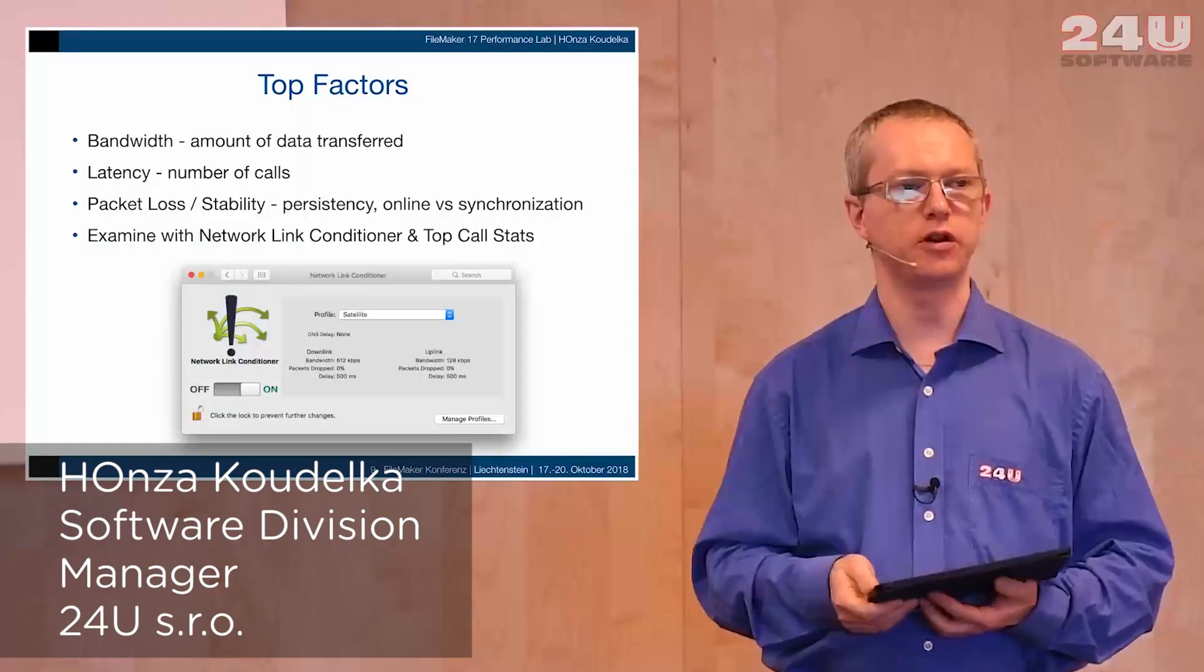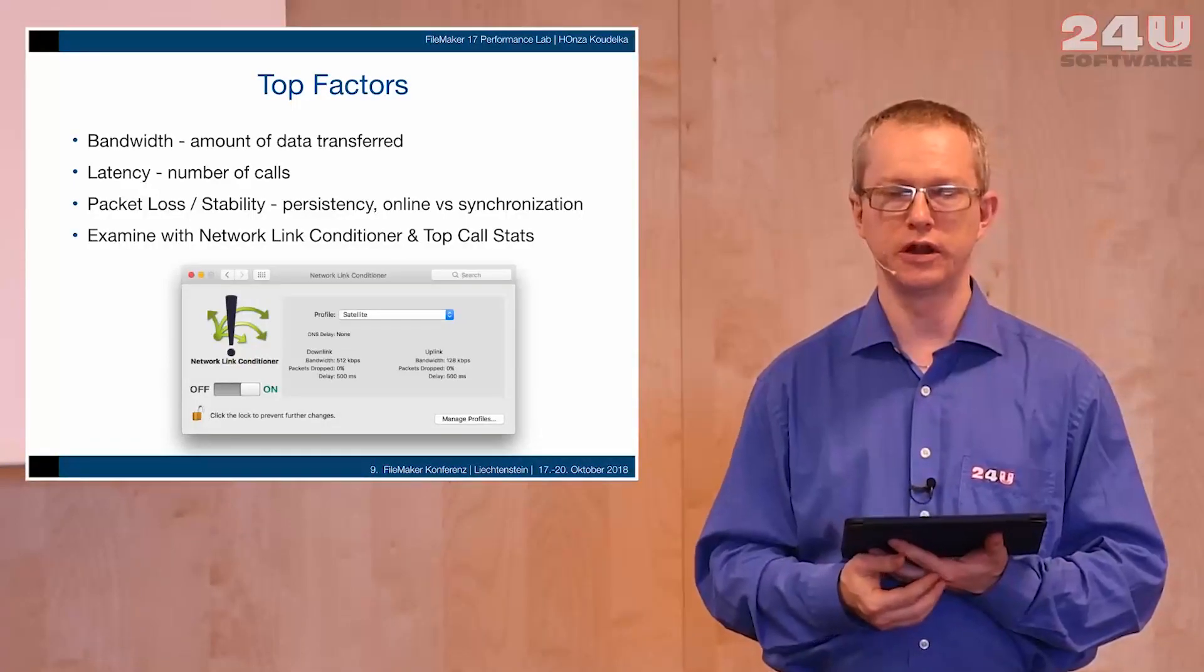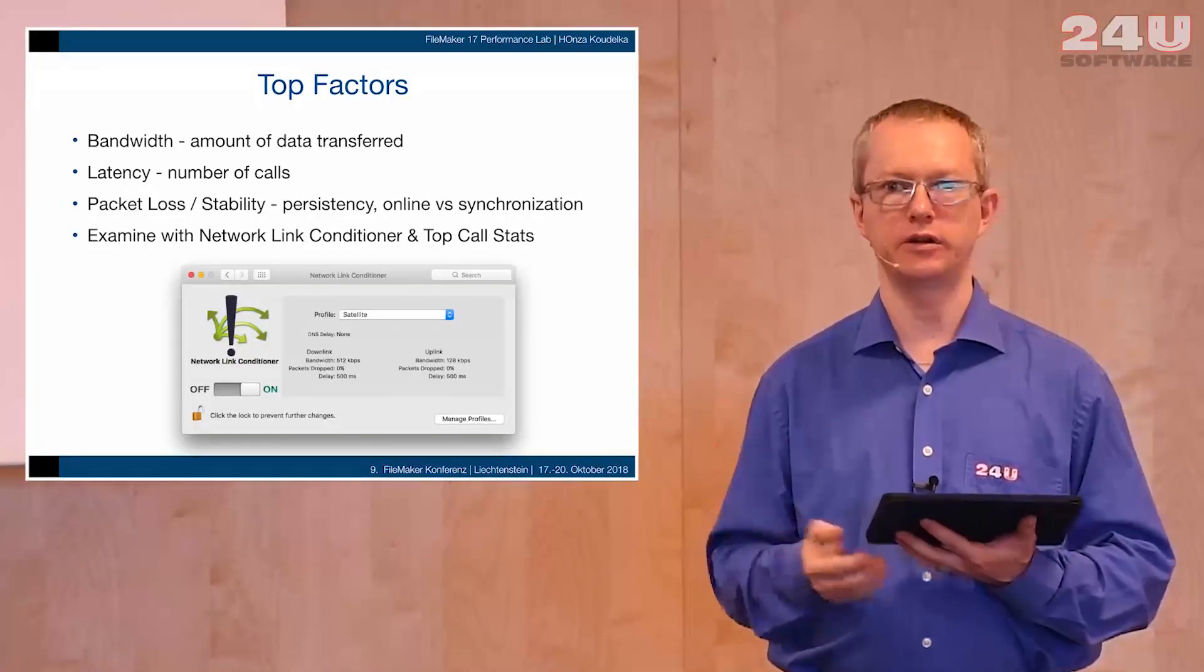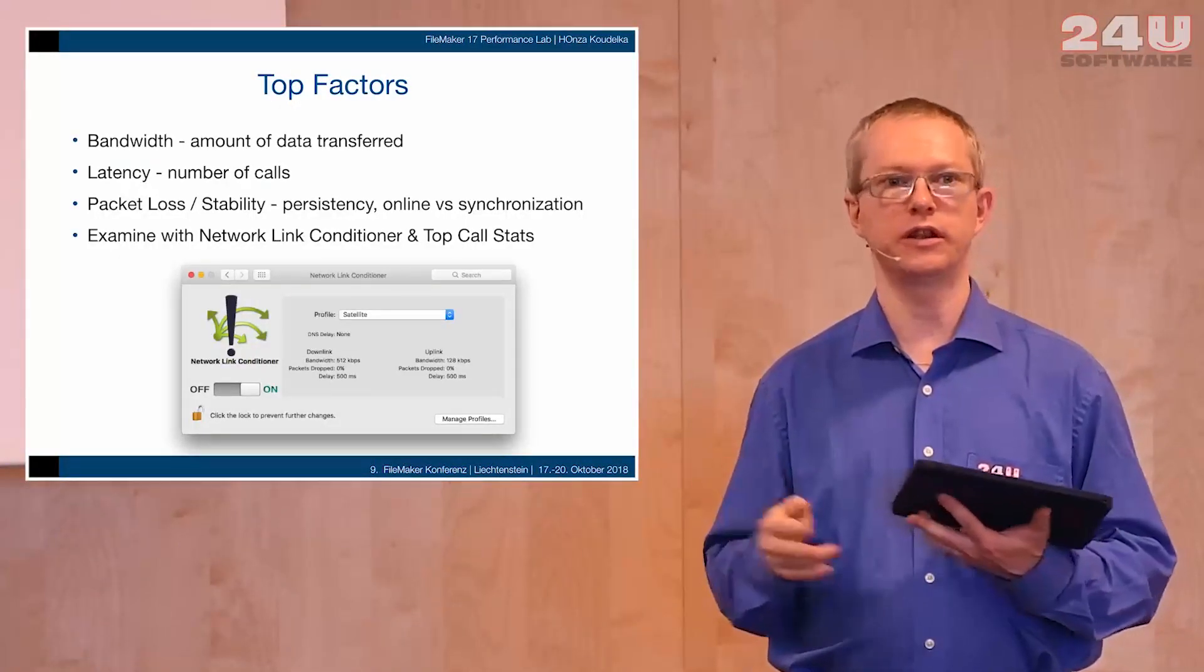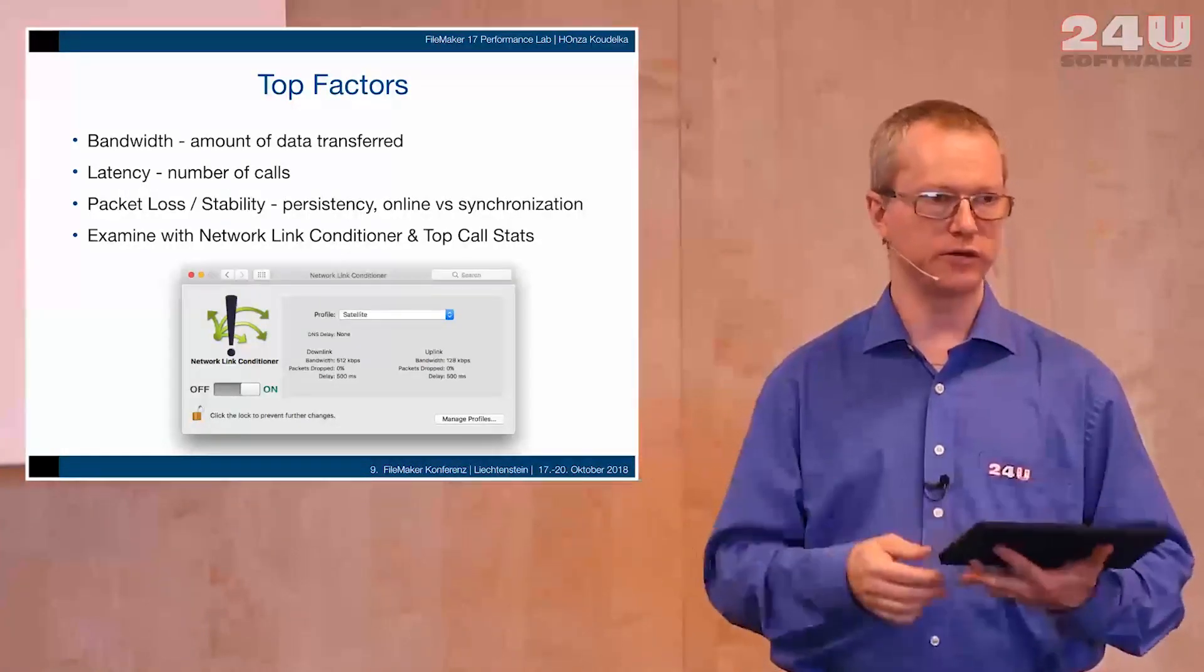When you work over network, what are the top factors that affect the overall performance of the solution? There are basically three parameters of the network connection. One is bandwidth, how much data you can transfer over time.